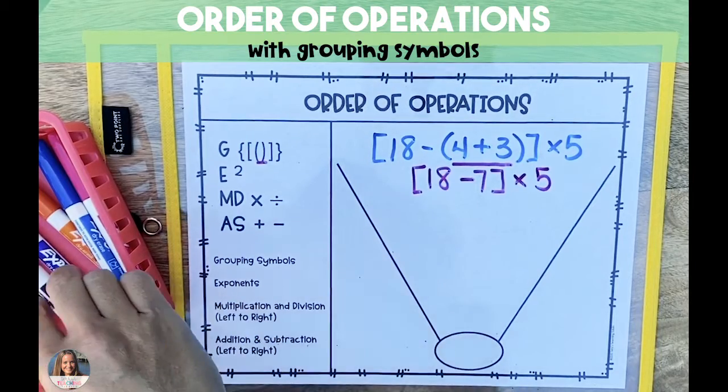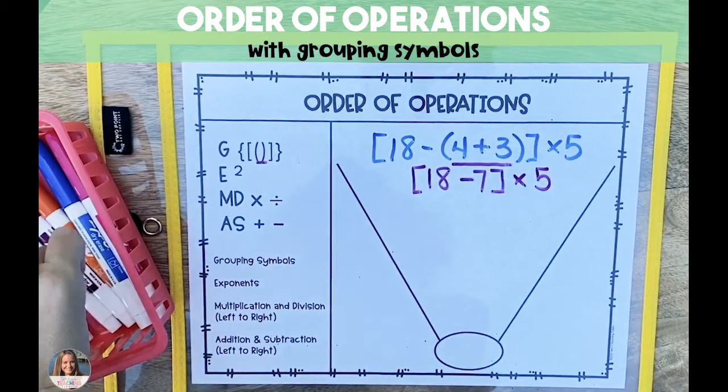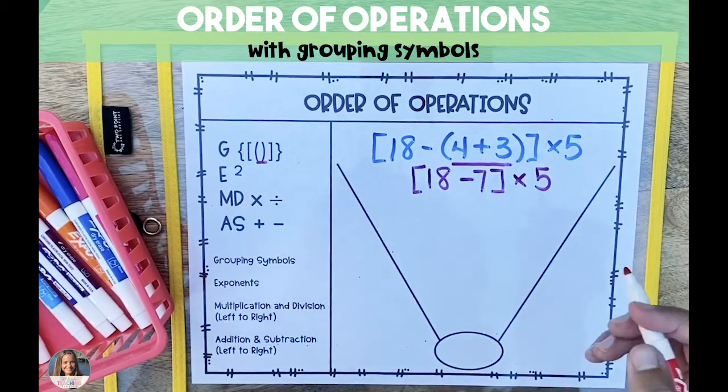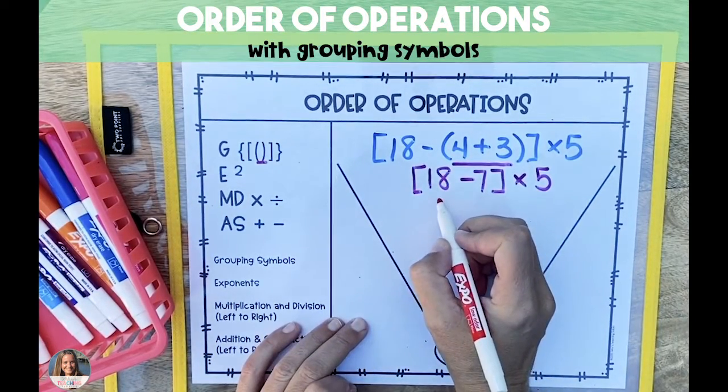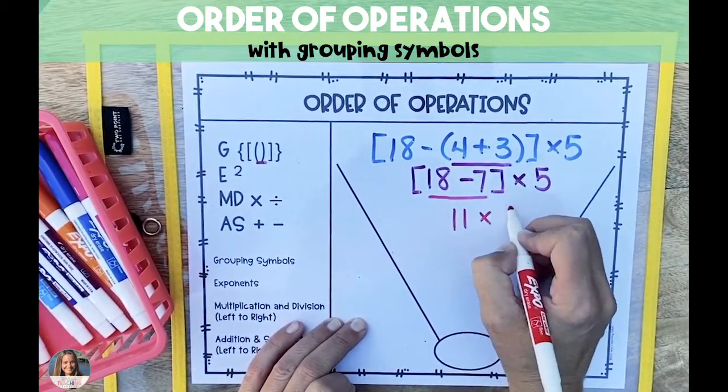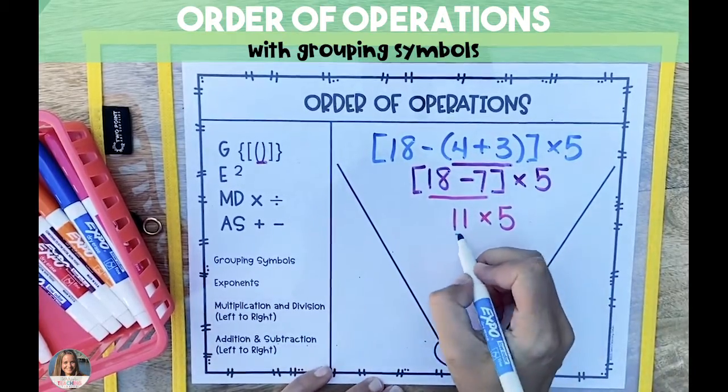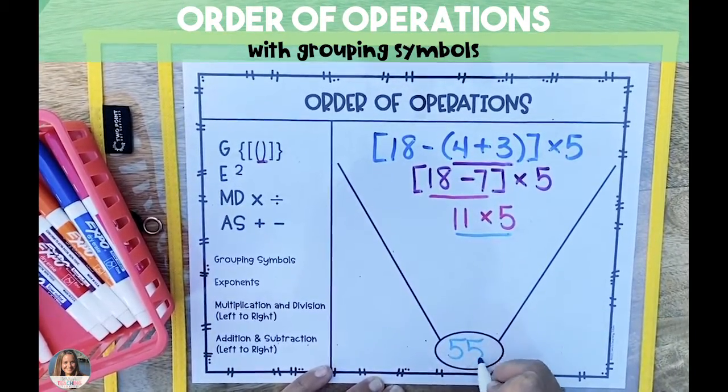Because the parentheses have been solved, you can get rid of them and just bring down the answer within the brackets. Next we solve the second symbol, which is the brackets, and 18 minus 7 is 11, and our final step is to bring down our multiplication problem and solve 11 times 5 for a final answer of 55.